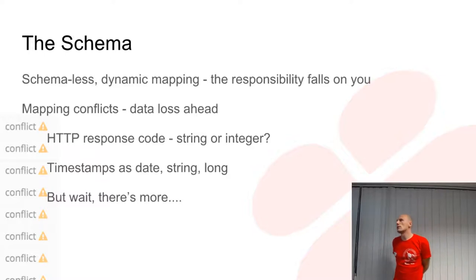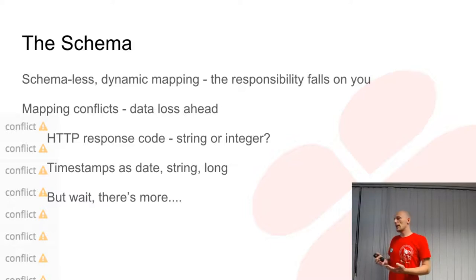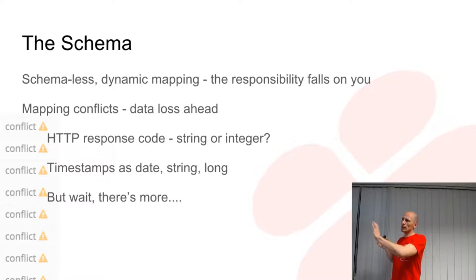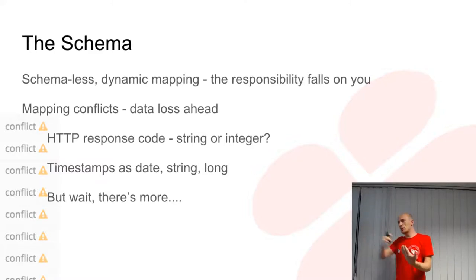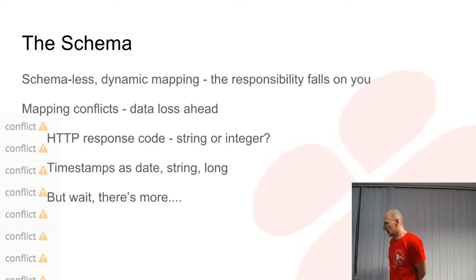Another example involves dates and timestamps. They can be mapped to Elasticsearch's internal date type, or to strings, or even to integers if you use Unix epoch format. If you use the same field name, there's another schema conflict. But all of this pales in comparison to the conflict between string and inner object in JSON. If your JSON logs are deep enough — four levels or so — you can pretty much count on that for every mapping conflict you resolve, you will have two extra. That's what happened to us.